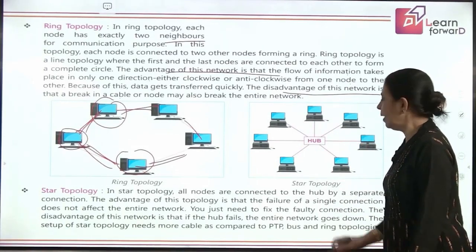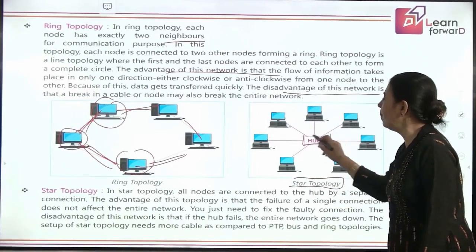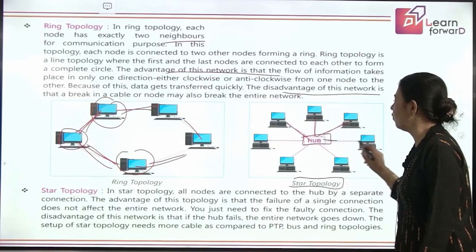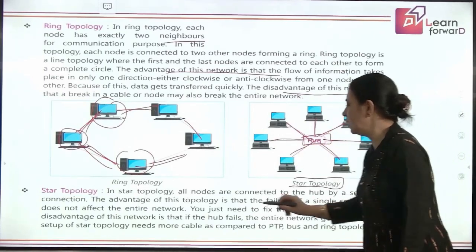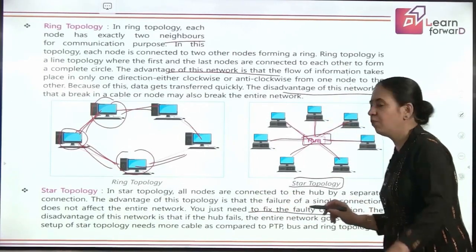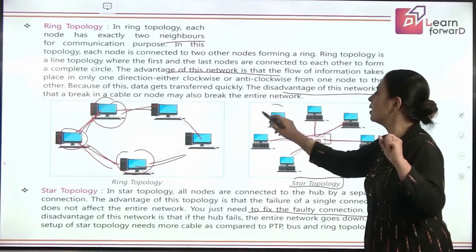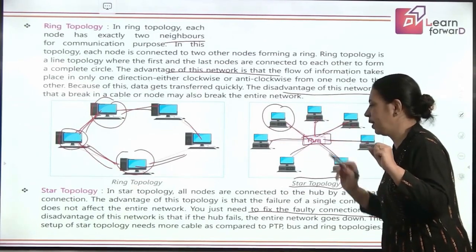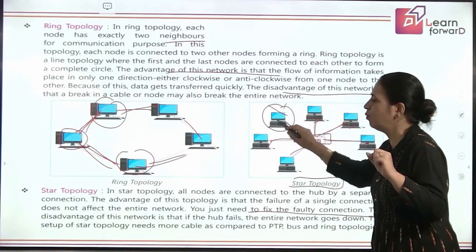In star topology, there is one central hub connected to different nodes. The advantage here is that if there is a breakage, you only need to fix that faulty connection — other nodes are not affected by a failure in any one system.